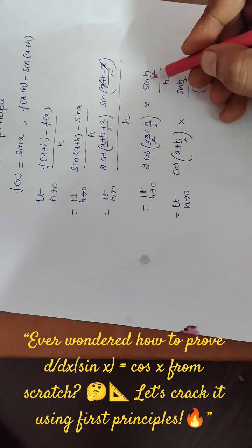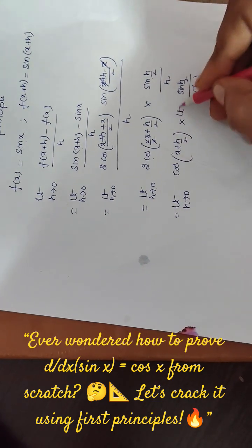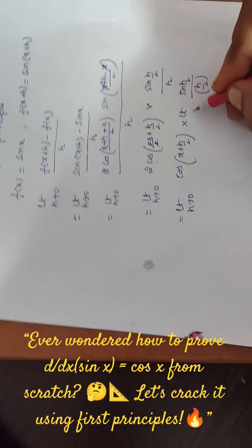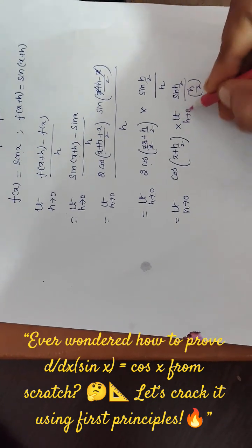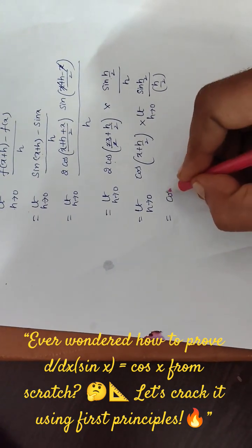If limit of function f of x into g of x, that is nothing but limit of f of x into limit of g of x. That means limit h tends to 0.